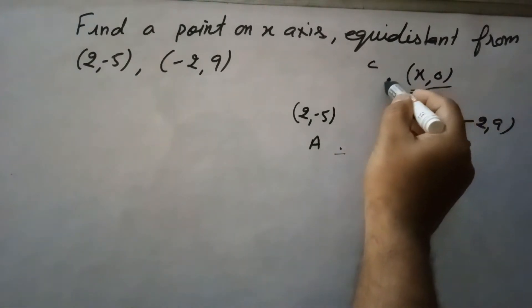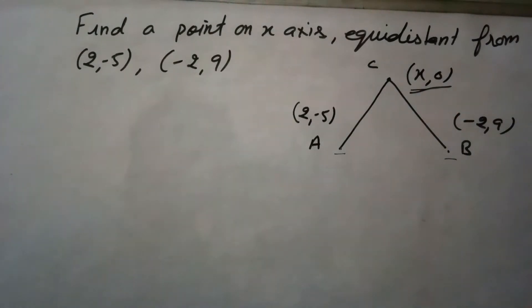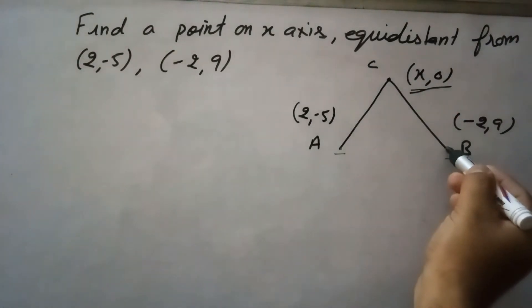So because this is equidistant, this distance is equal. AC and BC are equal. So we will use here the distance formula.